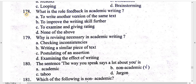Question number 178: what is the role of feedback in academic writing? To write another version of the same text. To improve the writing skill further. To examine and give rating. None of the above.